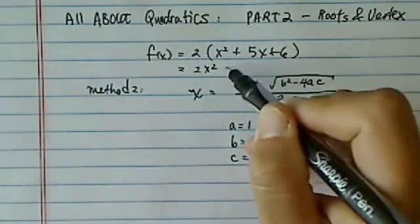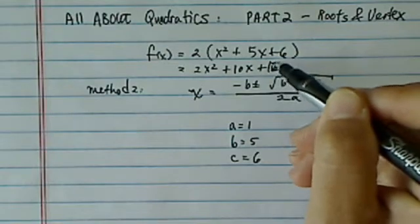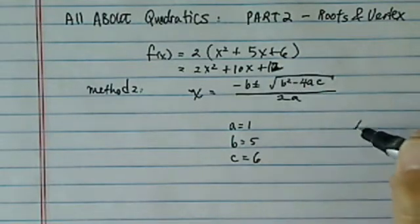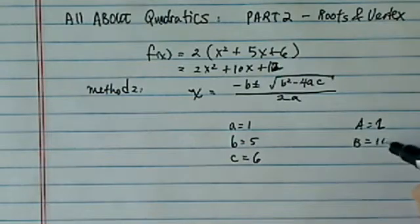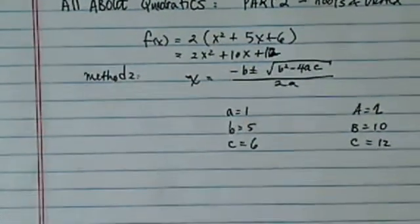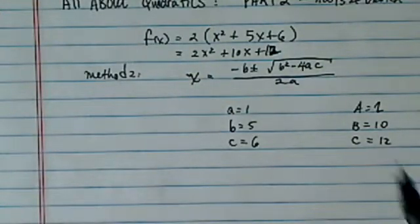Or some students say, wait a minute, if I multiply it through, doesn't that change the twelve? Doesn't that change my coefficients then? A equal to two, b equal to ten, and c equal to twelve. Well, let's try both cases, and you can see easily from there that both of them actually give you exactly the same thing.